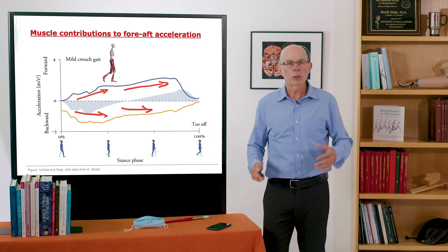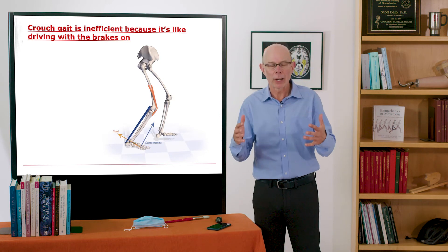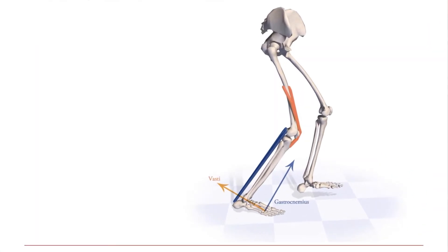And we were talking to Mike Schwartz about this data and he said this is basically inefficient, crouch gait is inefficient because it's like driving with the brakes on. So you're driving, you're in late stance, the gastrocnemius is on.